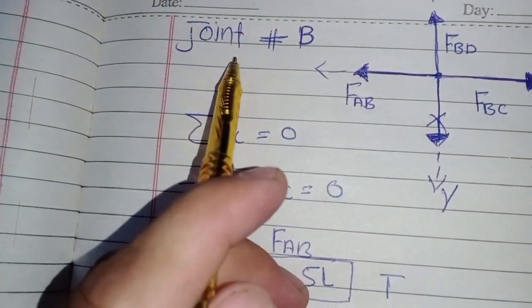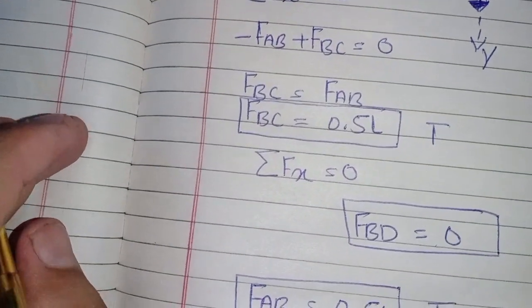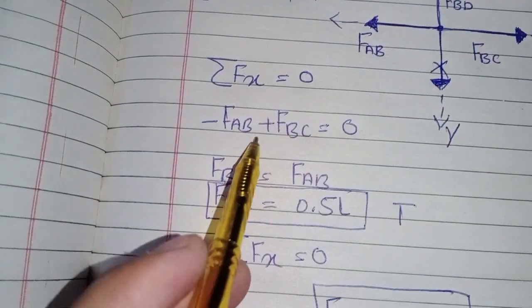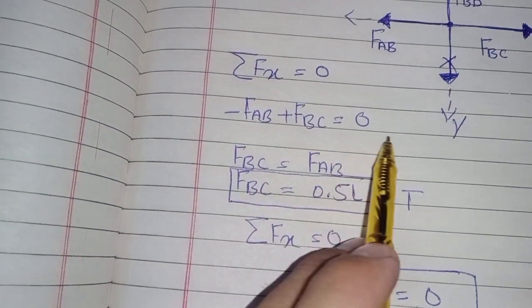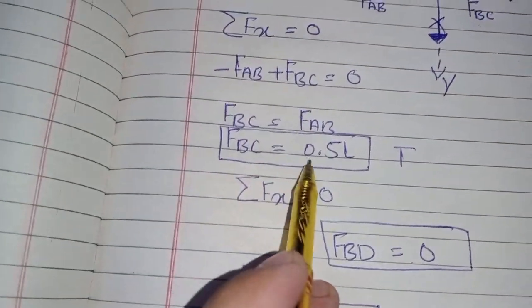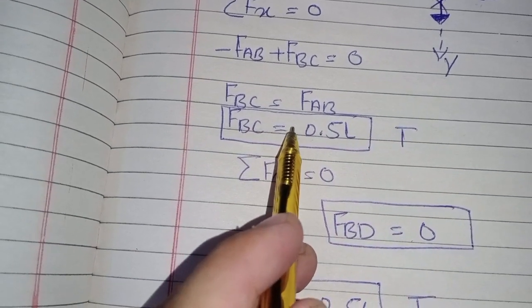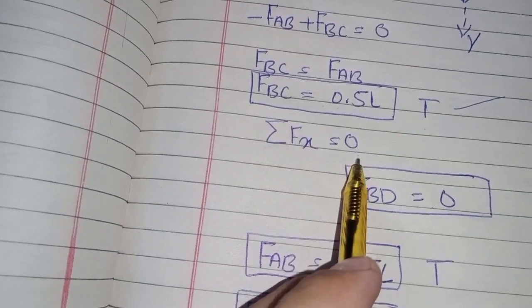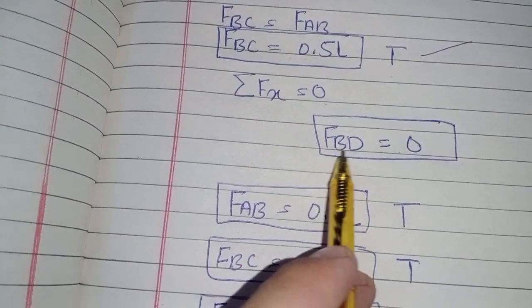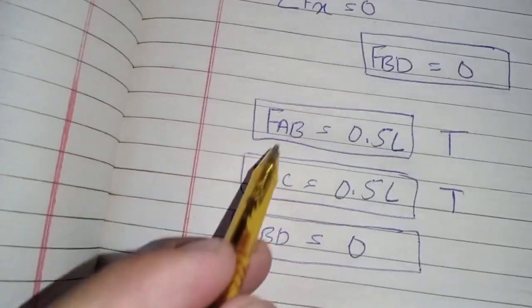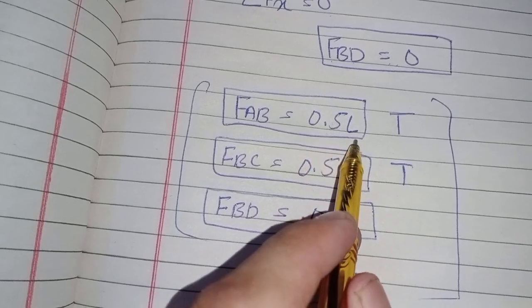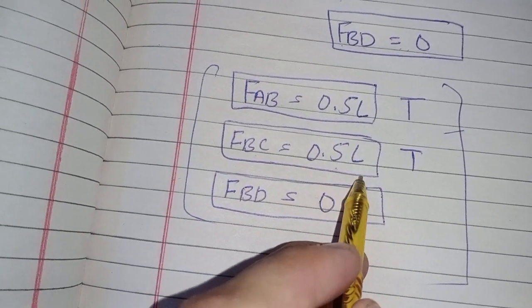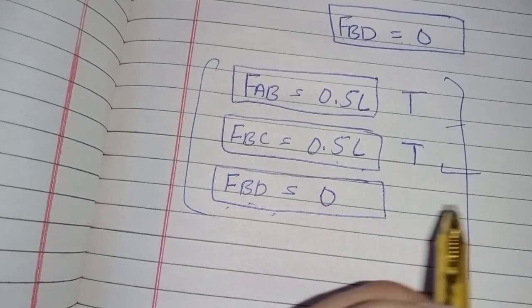Now I check joint B to find force F_BC. Summation of all forces in the x-direction equal to zero: negative F_AB plus F_BC equals zero, so F_BC equals F_AB equals 0.5L. The positive sign means my assumption was correct — it is in tension. Summation of all forces in the y-direction equal to zero: there is only one force, F_BD, so F_BD equals zero. So the three forces are: F_AB equals 0.5L tension, F_BC equals 0.5L tension, F_BD equals zero.